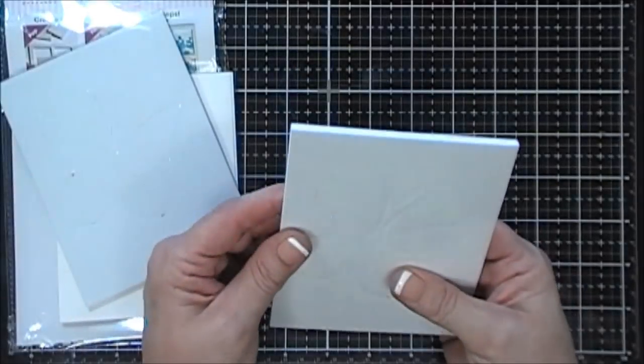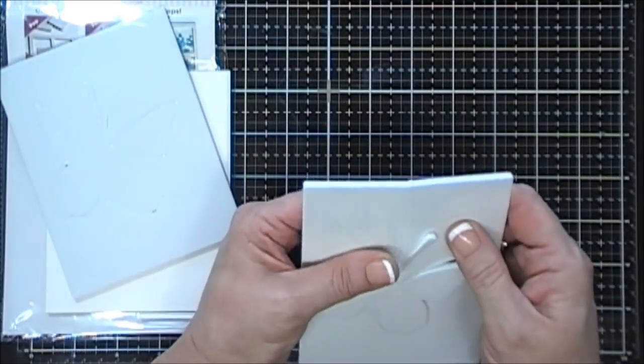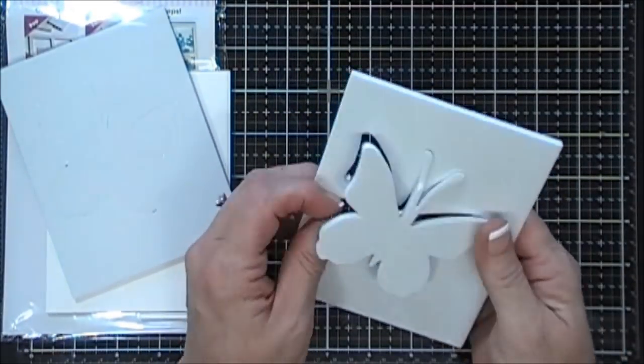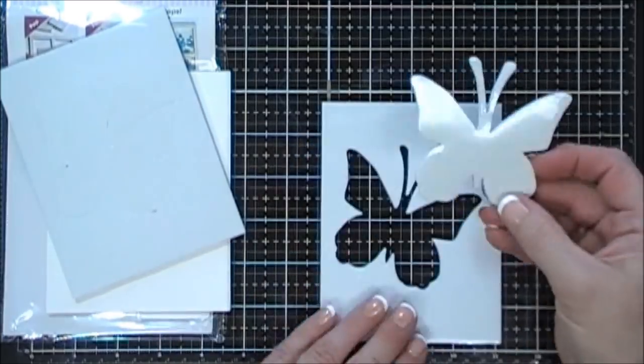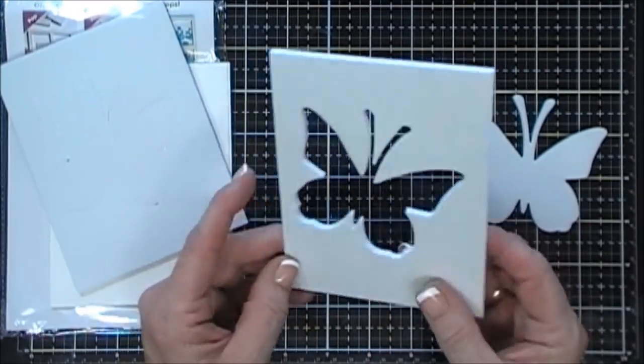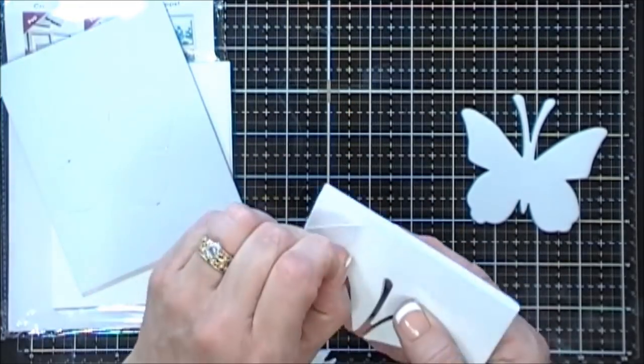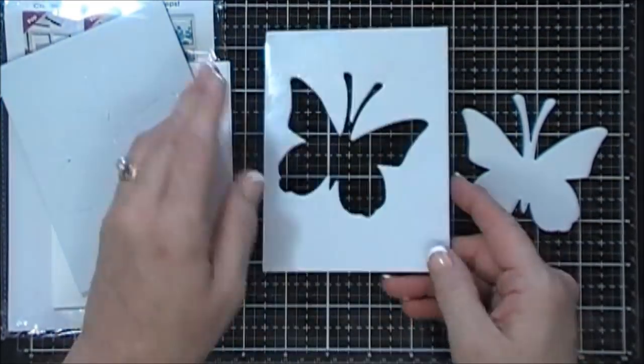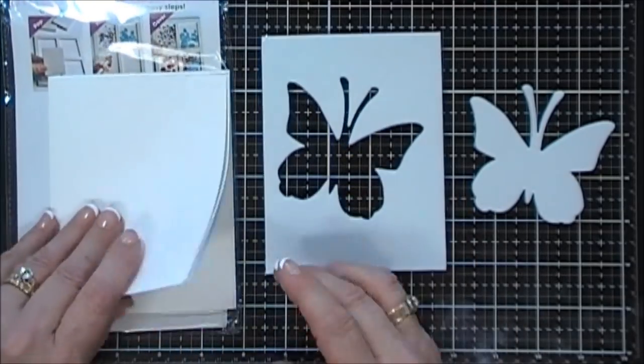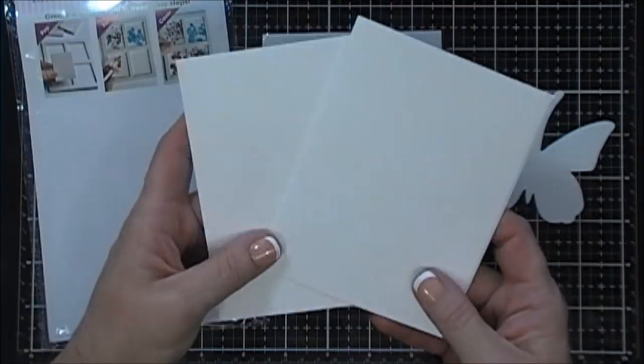You get your foam front. You just punch out the negative part of the butterfly. Well, I guess it's opposite. With foam fronts, typically this would be your negative piece, but we're going to call it the positive piece. It has adhesive backing on the front and the back, so all you have to do is peel and stick.